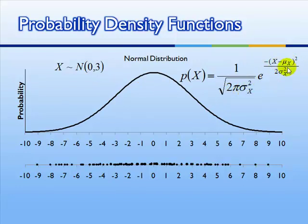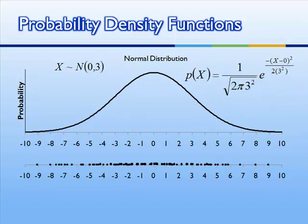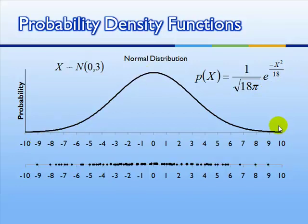And then if we simplify, we get this. So the probability of x equals 1 divided by the square root of 18 times pi times e to the negative x squared divided by 18. And we'll get this line exactly.